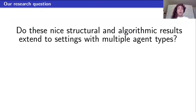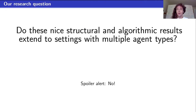Our main question is: do these nice structural and algorithmic results extend to settings with multiple agent types? And as I've hinted — spoiler alert — no, they don't. There are some very interesting things that break, and I want to show you an example of what can go wrong.